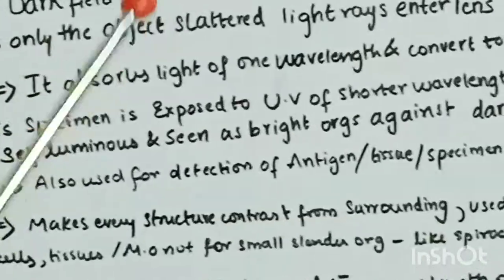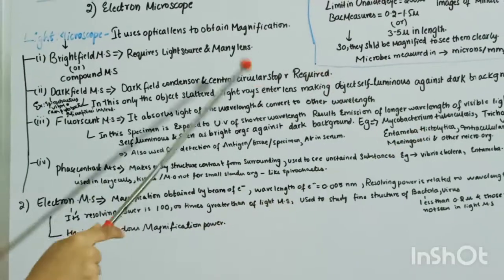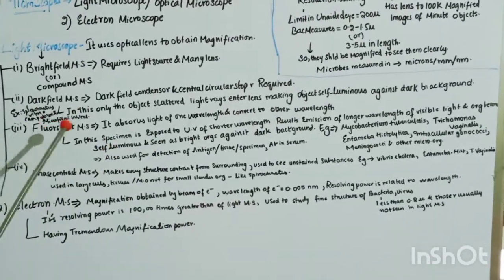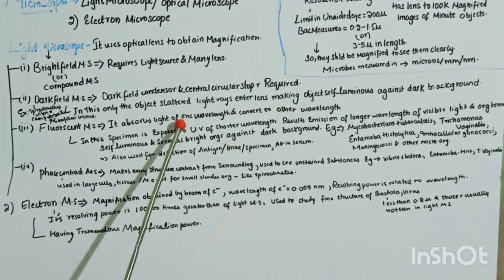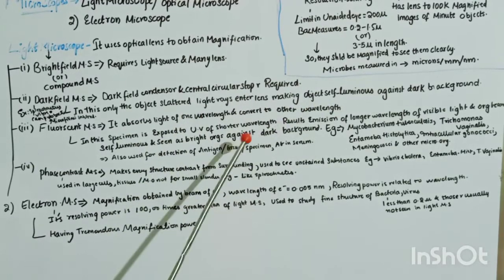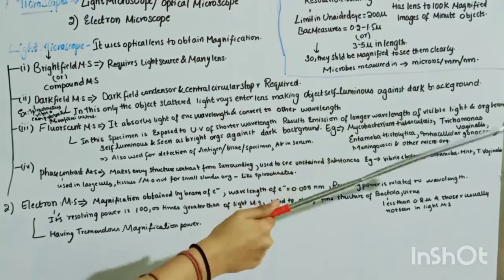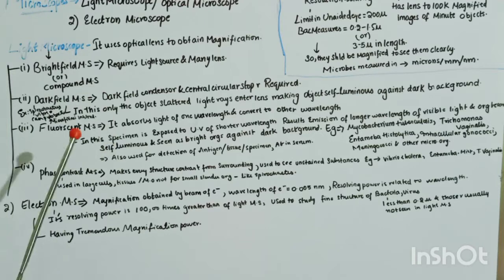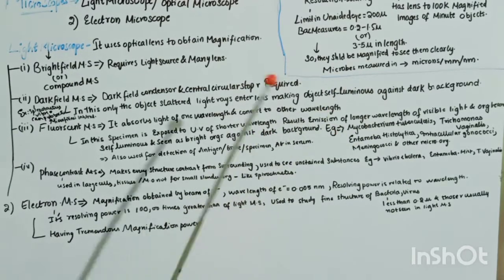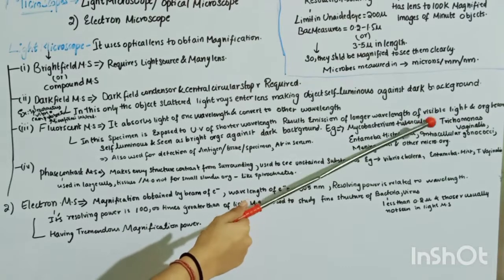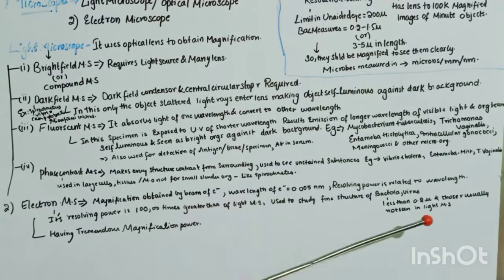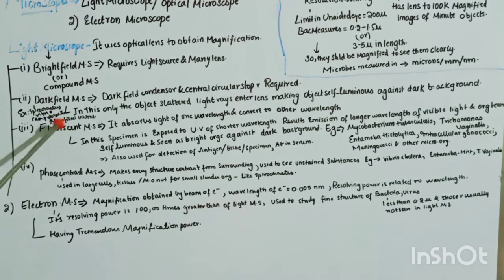The fluorescent microscope absorbs light of one wavelength and converts it to another wavelength. Specimens are exposed to UV light of a shorter wavelength, which results in the emission of longer wavelength visible light. The organism becomes self-luminous and appears as a bright organism against a dark background, similar to the dark field microscope. Examples include Mycobacterium tuberculosis, Trichomonas vaginalis, Entamoeba histolytica, intracellular gonococci, and meningococci.